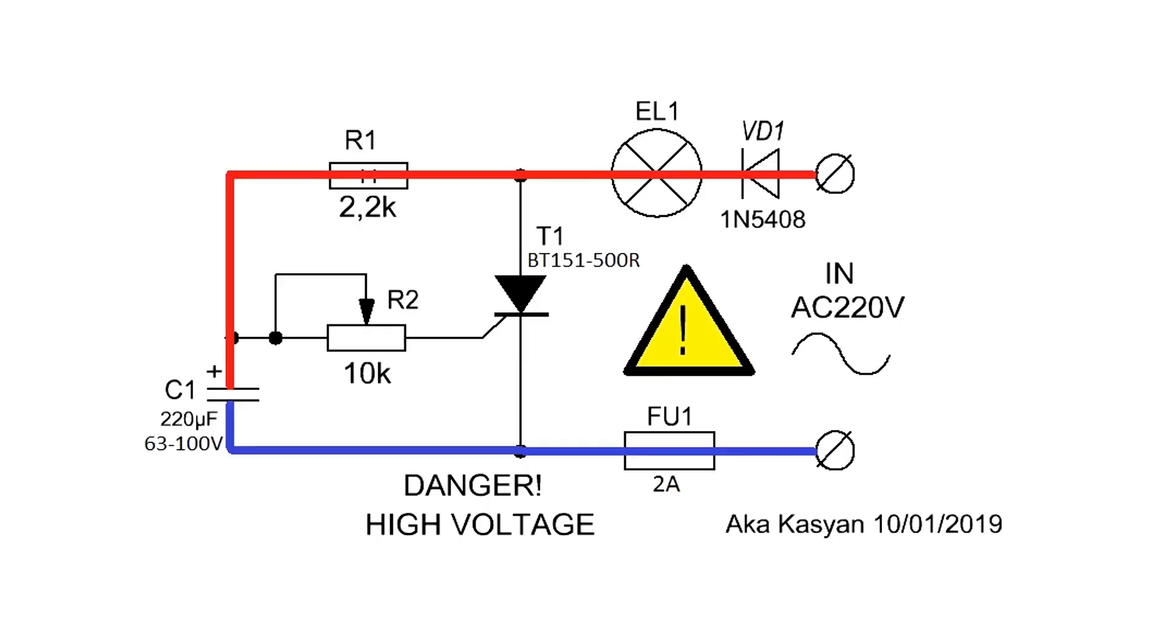The electrolytic capacitor is charged through resistor R1. When the voltage on it reaches a certain value, which is sufficient to trigger the thyristor, the latter will activate, and the lamp will light up. At this moment, the capacitor will discharge through the limiting resistor and the open thyristor. And theoretically, the thyristor should close. But, it's not that simple.